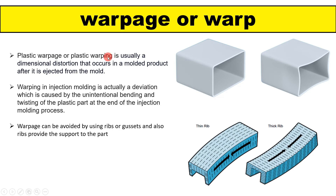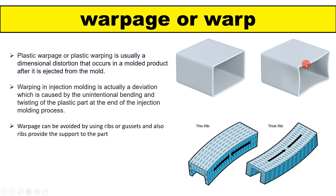Now let's discuss plastic warpage or warp. Warpage is nothing but the bending or twisting of the plastic part after manufacturing. This warpage can be avoided by using some ribs or gussets. As you can see, there is a long flat portion, and because of that, during cooling, this defect comes as bending or twisting of the part.